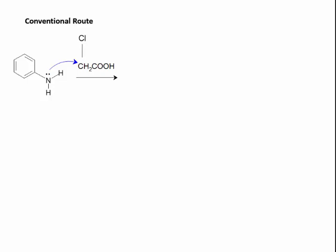The lone pair on nitrogen attacks the carbon and therefore releases a chlorine atom. This chlorine, being negatively charged, attacks the hydrogen and that is how HCl is eliminated, and we get this product.